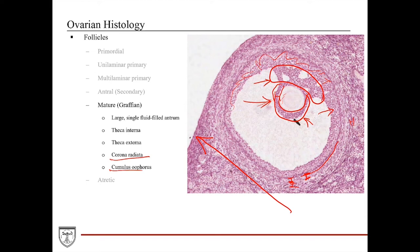Up until this point, the primary oocyte is still arrested in prophase I. But just before ovulation, the oocyte is triggered to finish meiosis I and enter meiosis II, thus becoming a secondary oocyte. Even the secondary oocyte, as ovulation occurs, is arrested again at metaphase of meiosis II. Once ovulated, the oocyte is called the secondary oocyte. It is surrounded by the zona pellucida as well as several layers of granulosa cells — the corona radiata. This meiotic division will not finish until fertilization is successfully achieved.